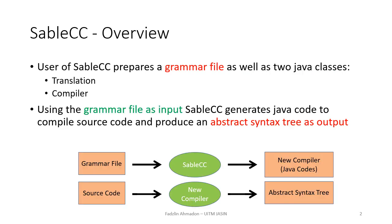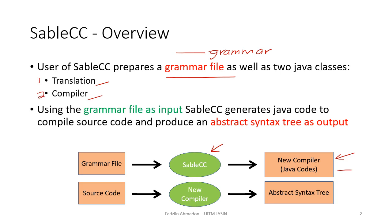To use SableCC, we provide a grammar file named something.grammar. We also prepare two Java classes: the first one is translation.java, and the second one is compiler.java. By using our grammar file as input, SableCC will generate Java codes automatically. Together with the translation file, compiler file, and all the generated Java codes, we compile them using Java.